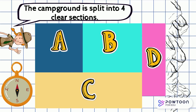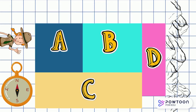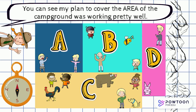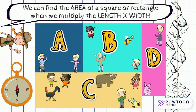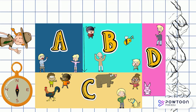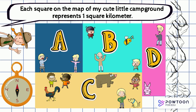The campground is split into four clear sections. The first part of my plan was for all the campers to split up and cover the area of the campground. Did you hear that? Area. We can find the area of a square or rectangle when we multiply the length times the width. Say it with me: area equals length times width. Each little square of my cute little campground represents one square kilometer.